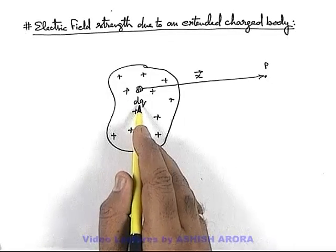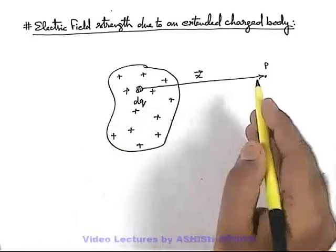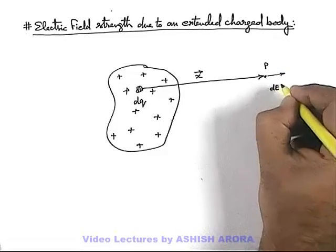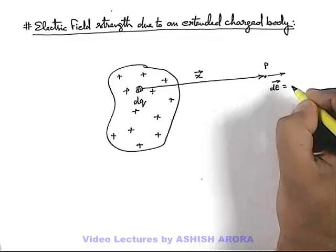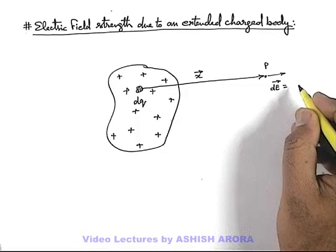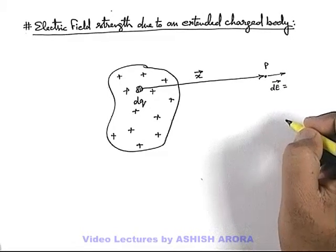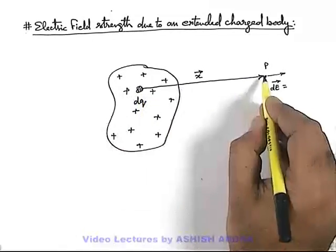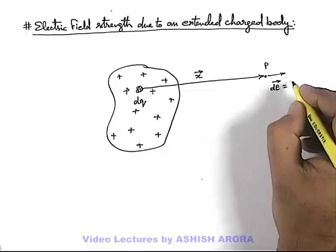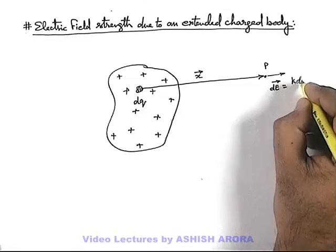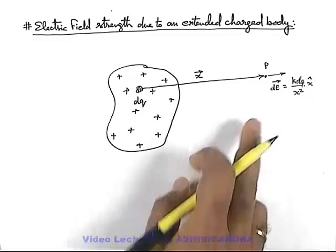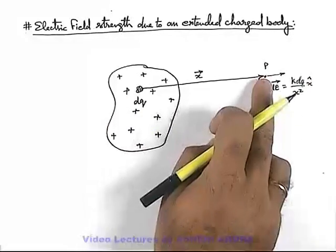Then this dq can be considered as a point charge and electric field strength at point P due to dq can be written as dE vector. The magnitude of dE vector as well as its vectorial form can be given by the expression we have discussed in the previous article. As the charge is dq and point P is located at a position x vector, then it can be written as k dq by x square multiplied by x cap. So this is the electric field only due to dq at point P.